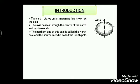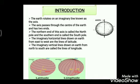We all know that the earth rotates on an imaginary line known as the axis. This axis passes through the center of the earth and has two ends — the northern end is called the north pole and the southern end is called the south pole. These poles are the fixed points of reference on the earth's surface, and the other imaginary lines — latitudes and longitudes — are drawn with respect to these points.